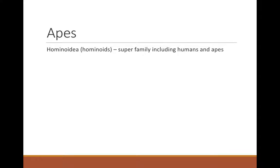That brings our discussion now to extant apes. When we talk about apes, we've got to talk about a few terms. We'll start with Hominoidea, the hominoids — the superfamily that includes humans and all apes: the lesser apes, the gibbons and siamangs, the orangutans, as well as chimpanzees and gorillas. The hominids addresses African apes and humans, and the hominins addresses the line that gives rise to modern humans.